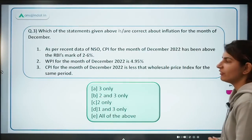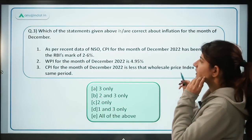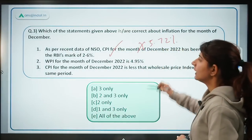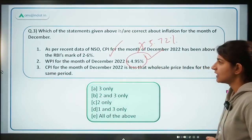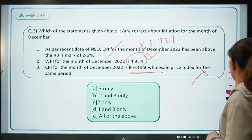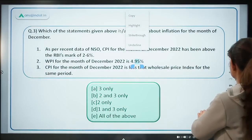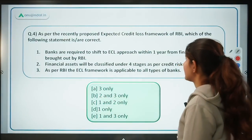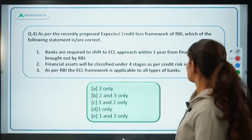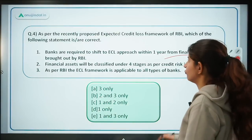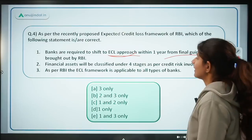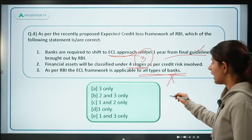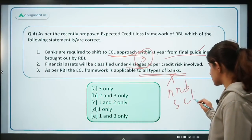More questions: CPI for December at 5.72% is within the RBI mark of 2-6%, so the statement that it was 'above RBI's mark' is wrong. WPI for December at 4.95% — correct. The statement that CPI is less than WPI is wrong since CPI was 5.72% and WPI was 4.95%. Banks are required to shift to the ECL framework within one year of final guidelines from RBI — true. Financial assets will be classified under 4 stages — wrong, it is 3 stages. ECL framework applies to all banks — wrong; RRBs and small cooperative banks are excluded based on a threshold to be announced.